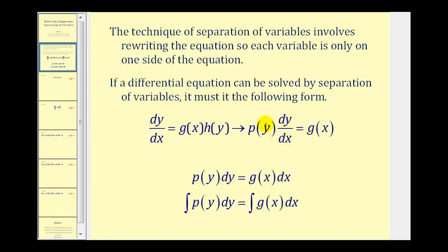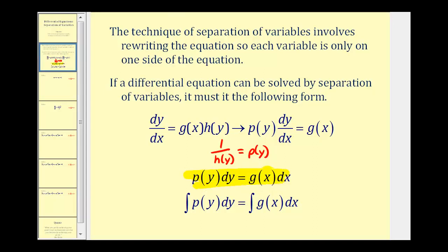Looking at these two forms, if we multiply this equation by one over h of y and let this function equal p of y, then these two equations would be equivalent. The main idea is that we want the x's on one side and y's on the other in this form. If we can do this, then we can integrate and find the solution to the differential equation.